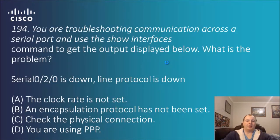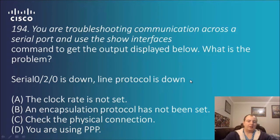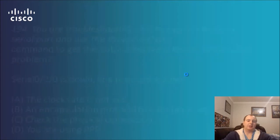Question 194: you are troubleshooting communication across a serial port and use the show interfaces command to get the output displayed. What is the problem? Serial 0/2/0 is down, line protocol is down. Being that both are down means there's something wrong physically — this can be distinguished from administratively down, which means it's been configured to be down. Since both are down, we have to check the cabling and power, so the answer is to check the physical connection.